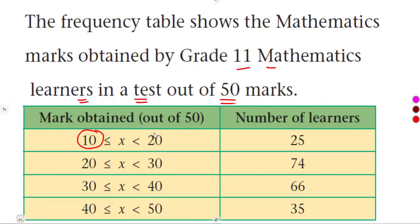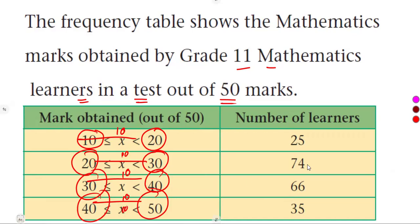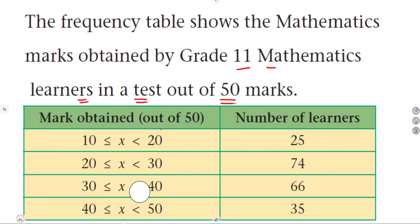Looking into this 10 to 20, from 20 to 30, from 30 to 40, from 40 to 50, you can see that it is the same width in between, the difference of 10 in between, the same class width. Thus, our histogram is a basic one. We just work with the frequencies as they are, the number of learners. This is your frequency as it is.